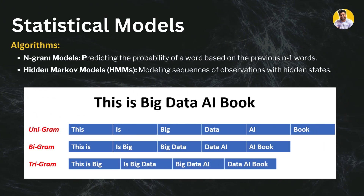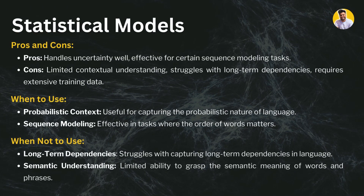The next type is statistical models, such as n-gram models and hidden Markov models. N-gram models predict the probability of a word based on the previous n-1 words — this includes unigram, bigram, and trigram models — predicting the next word based on previous context. Hidden Markov models are sequence-based models that model sequences of observations with hidden states, where hidden states represent data from previous words or sentences.